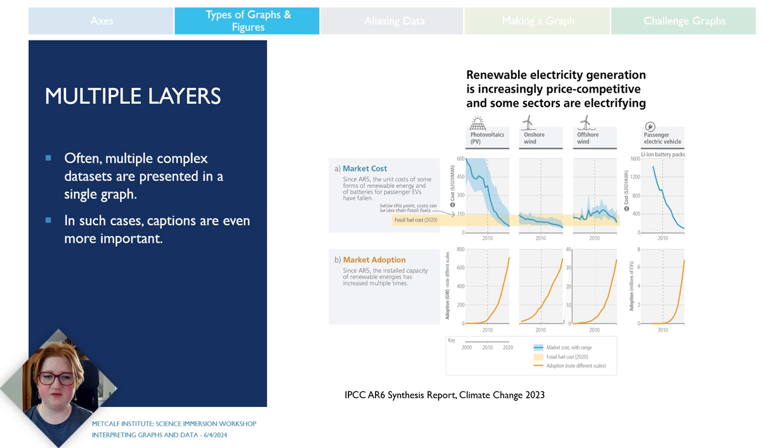The multiple layers types of figures is very common in a lot of research where there's multiple graphs that are being compared directly to each other that have the same axis. For instance, with all of these figures comparing the market cost and market adoption of all of these renewable energy sources, they all have the same x-axis. This is all going from 2000 to 2020. So it makes sense that they're stacking them on top of each other so we can compare them directly. Additionally, each column links up to a specific type of energy source. So we have our solar panels, our onshore wind, and then our offshore wind, as well as our passenger electric vehicles.